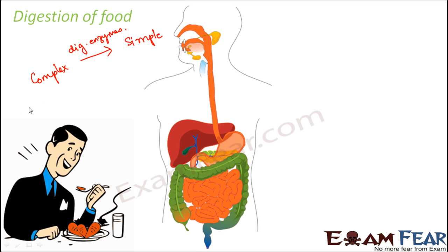During digestion, the complex food is broken down into its simplest form by the action of digestive enzymes. This is a change because the food is getting changed from one form to another. But is it reversible? No, because you cannot join the simple forms of food back together to form the complex form. So digestion is an example of irreversible change.